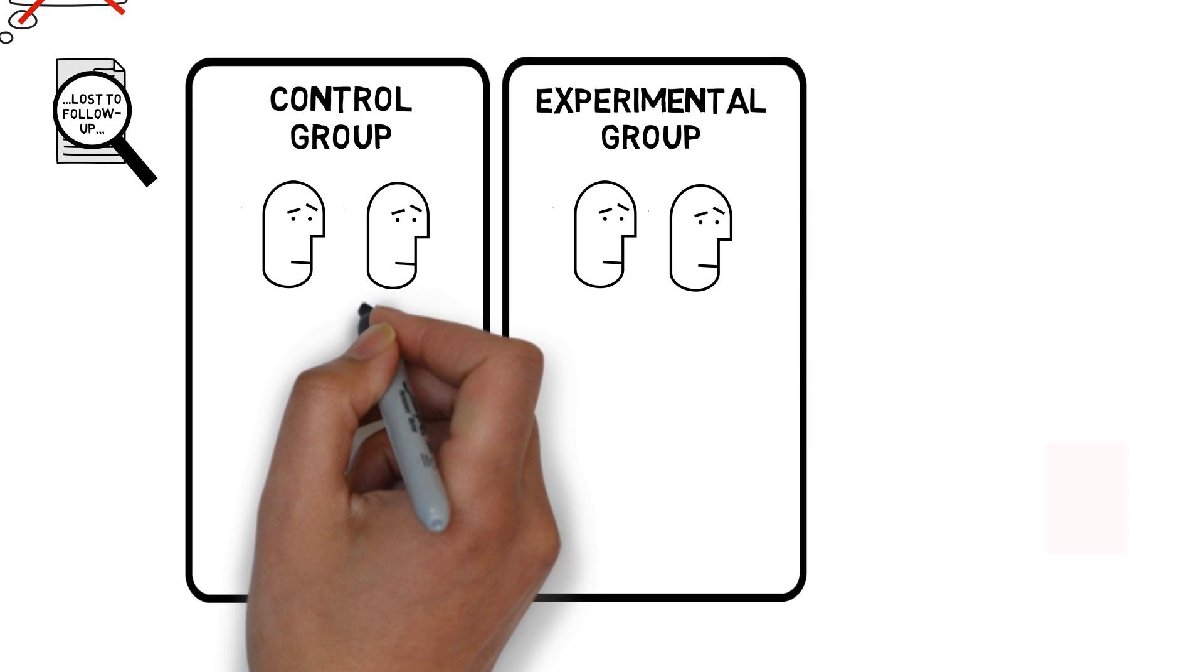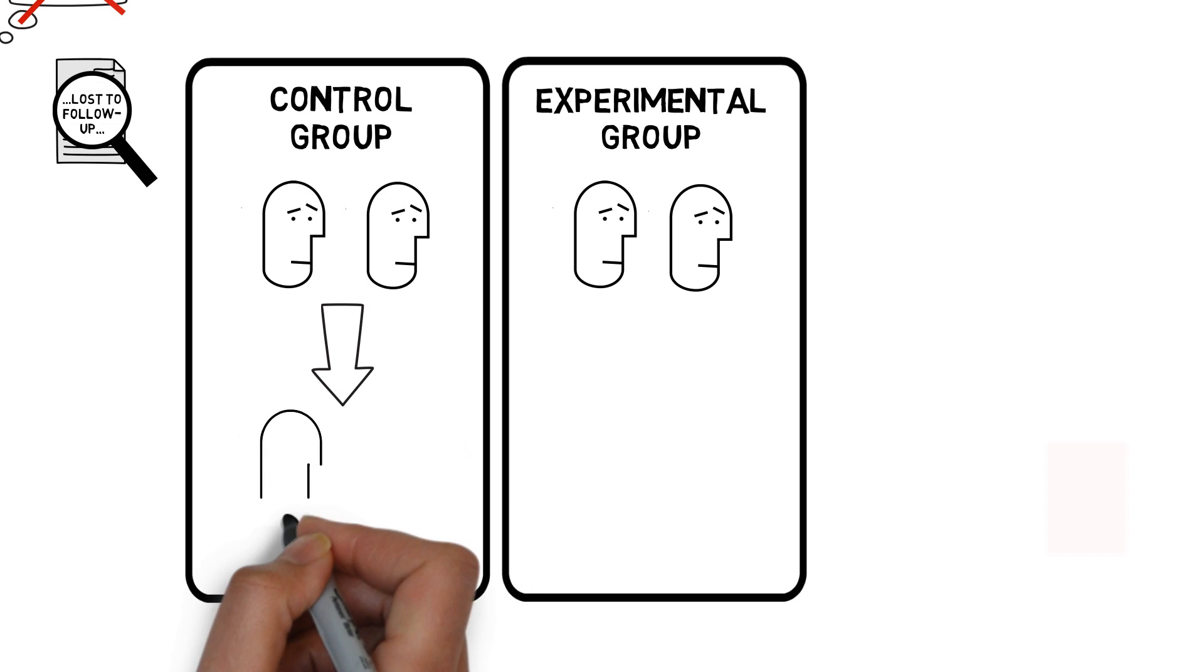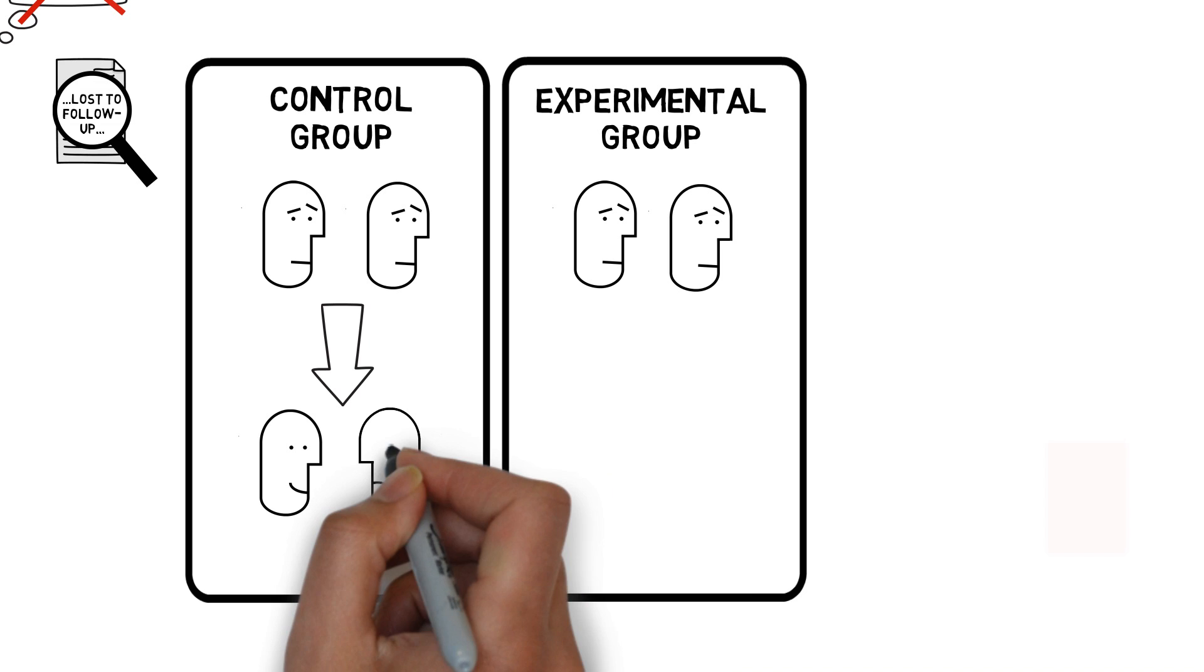In the control group, one of the two participants has the good outcome, and the other participant does not have the good outcome. Now, I'm a bit of a math whiz,